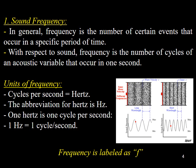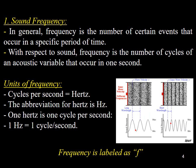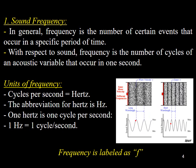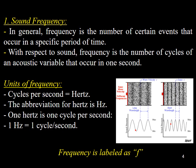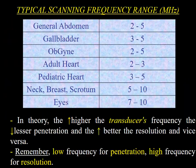The abbreviation for frequency is lowercase f. The hertz is the SI unit of frequency, and one hertz equals one cycle per second. The attached table depicts the typical scanning frequency range in medical diagnostic ultrasound. The higher the transducer frequency, the less penetration and the better the resolution, and vice versa. Keep in mind that low frequency is for penetration and high frequency is for resolution.